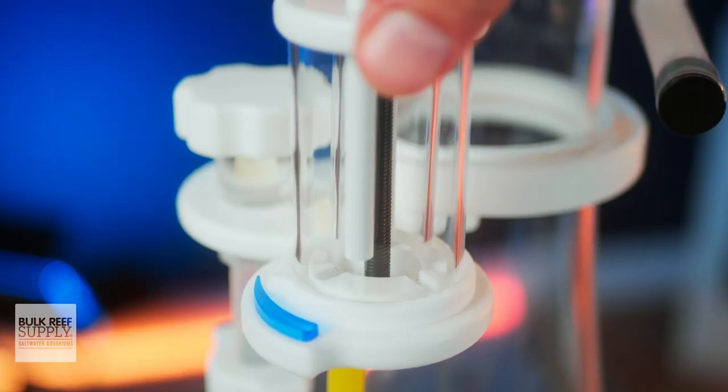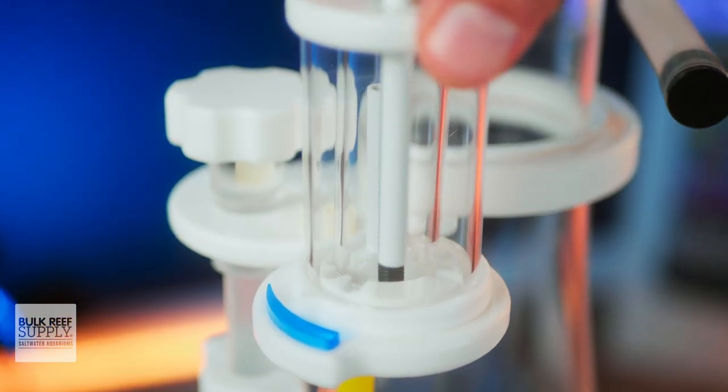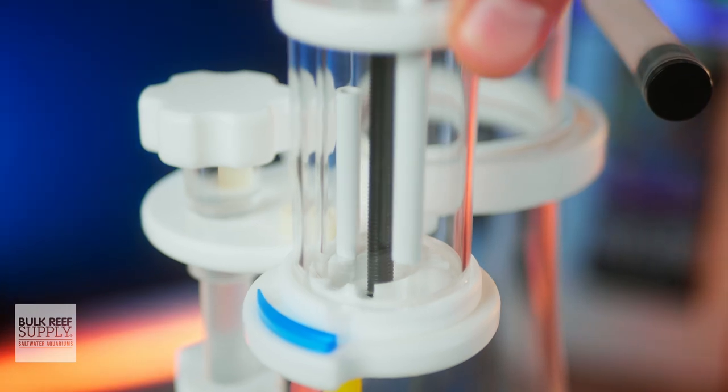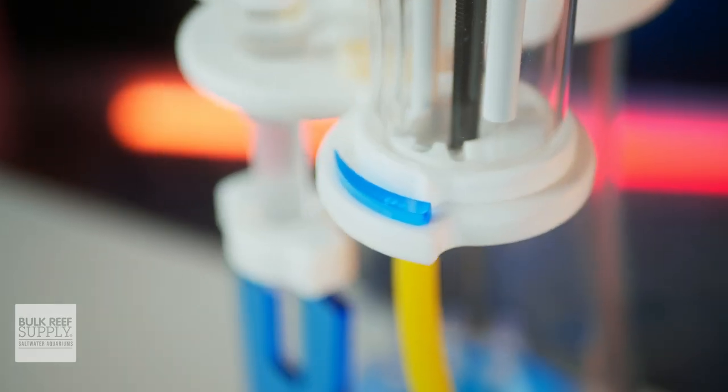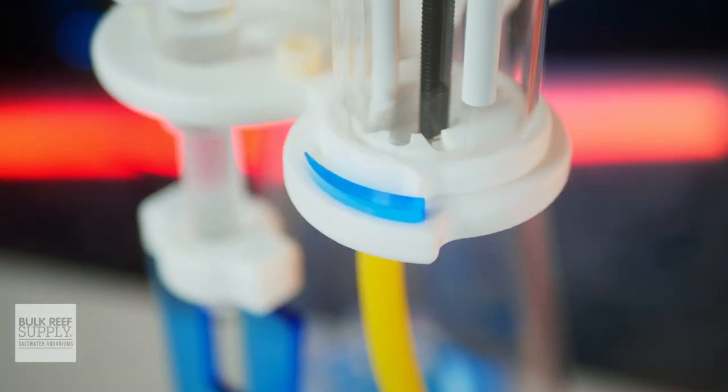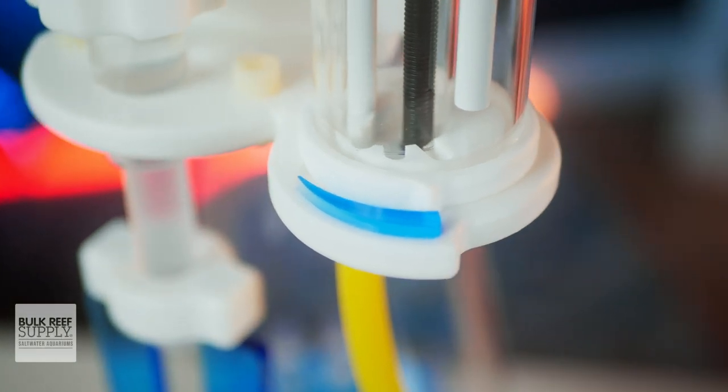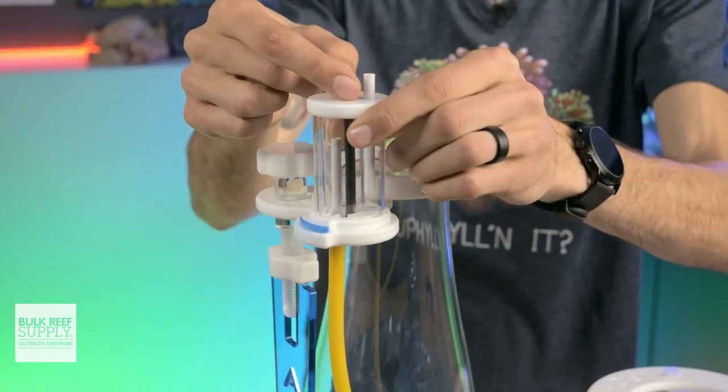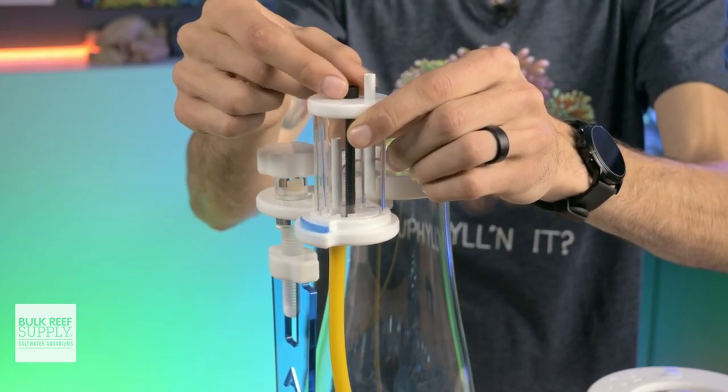To dial in these skimmers, you have two points of control. First, you can dial in the air to organics ratio by twisting the air silencer, which doubles as a valve. There's a blue marker at the base of the silencer to indicate the direction for adding more versus less airflow, and you can tighten down the screw to hold it firmly in place once you've got a stable foam.